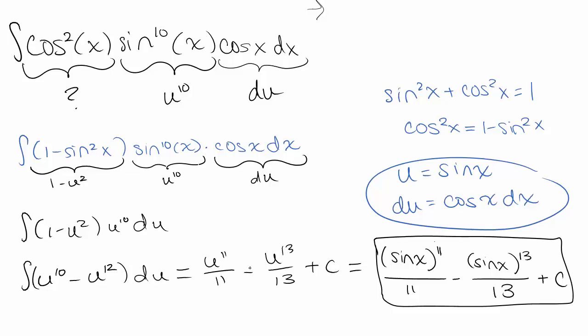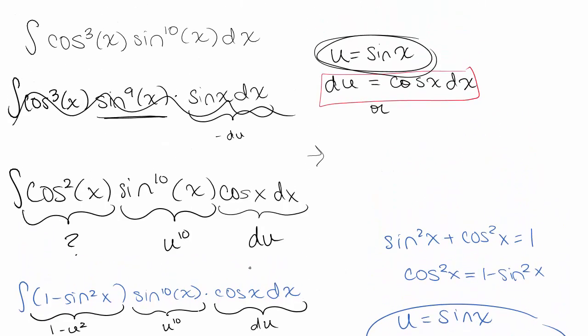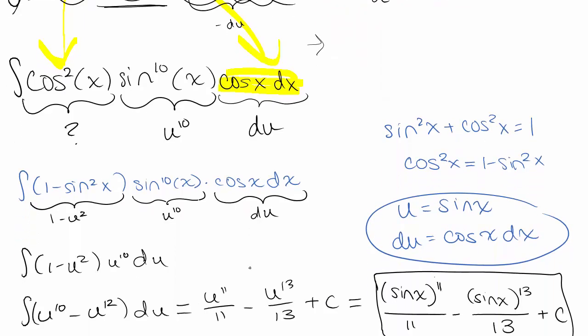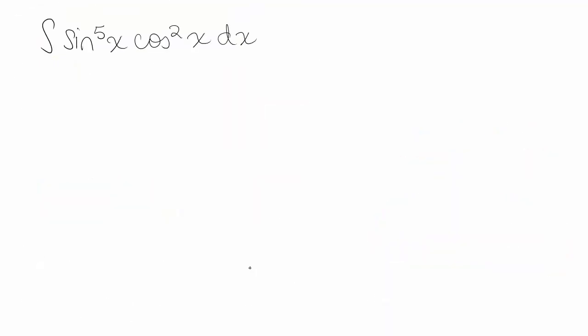Notice that what we did here was: if our beginning integral had an odd power of cosine, we could take one of those cosines and use it as our du, and the remaining cosines would be to an even power. All of those cosines can then be converted to sines using the Pythagorean identity. Now let's look at sine to the fifth of x cosine squared of x dx. Notice that this time the power of cosine is even.